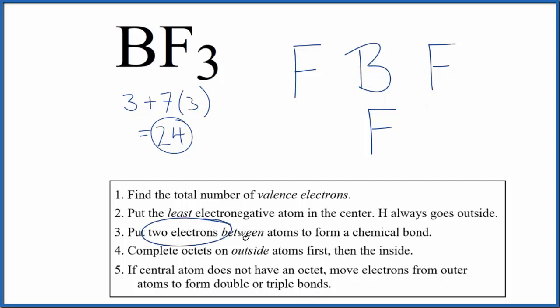Next, we're going to put two electrons between the atoms to form the chemical bond. So now each of these has a bond. They're sharing two electrons, covalent bond.